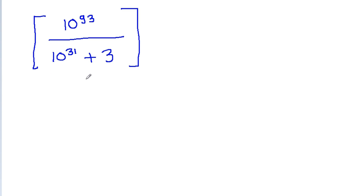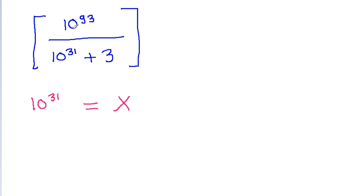If we take x = 10³¹, then 10⁹³ will become x cubed. Here we get x³ / (x + 3).